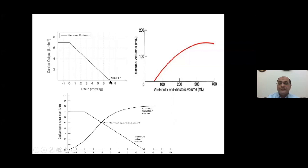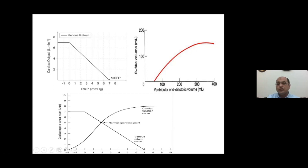On the other side, Frank and Starling demonstrated the correlation between preload of the left ventricle — ventricular end-diastolic volume on the x-axis — and stroke volume or cardiac output on the y-axis. The Frank-Starling curve demonstrates an exponentially rising, steep portion where stretching of the ventricle is associated with increased stroke volume, until it reaches the flat point at which any further increase in preload will no longer cause increased stroke volume.